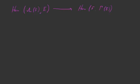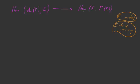Let me clarify the notation: here F is a presheaf on X, and E via the map p is a space over X. So let's say that we have some map f going from lambda of F into E — in other words, let's say we have some element of this set. We should figure out what this maps to.